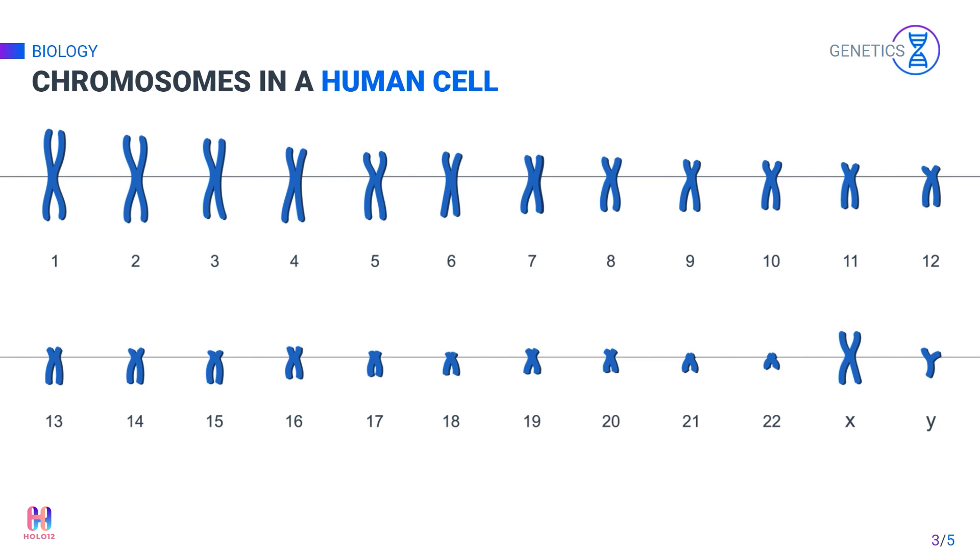Out of these 46 chromosomes, two chromosomes are sex chromosomes, the X chromosome and the Y chromosome, while the remaining 44 chromosomes are known as autosomes. Autosomes are defined as any chromosomes that are not sex chromosomes.